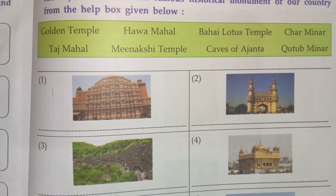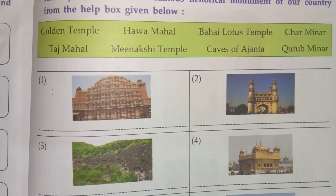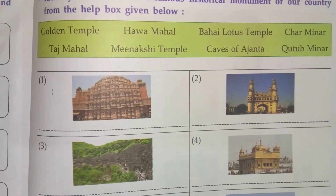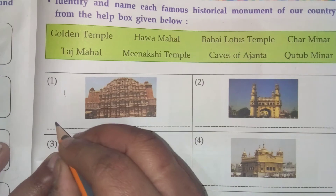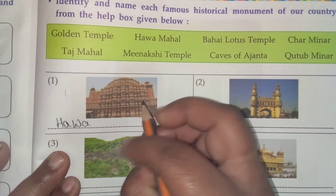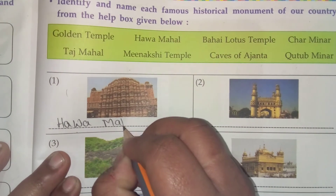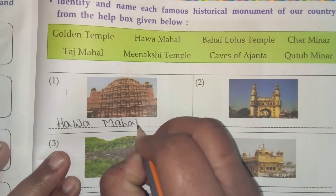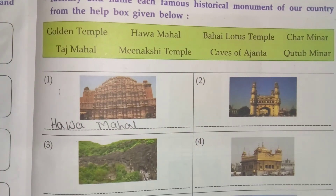Now the first picture — see children, what is this? This is famous in Rajasthan. This is Hawa Mahal. H-A-W-A, Hawa, M-A-H-A-L, Mahal. Hawa Mahal.